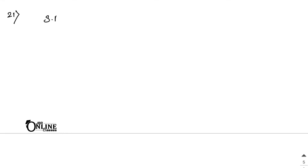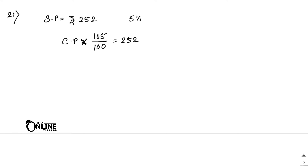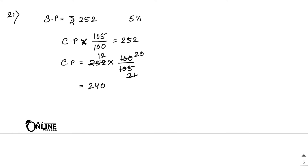Sum number 21: By selling a tie for rupees 252 a shopkeeper gains 5%. So CP into 105 by 100 equals 252, therefore CP equals 252 into 100 by 105. Simplifying: 5 into 20 and 252 divided by 21 equals 12, so CP equals 240.